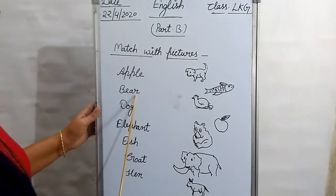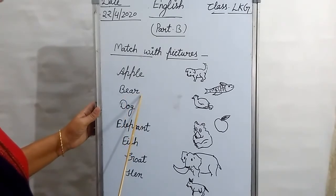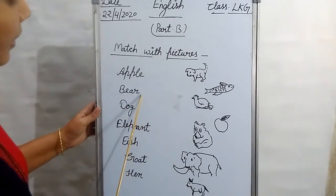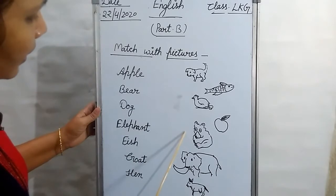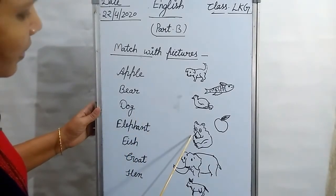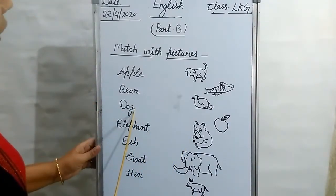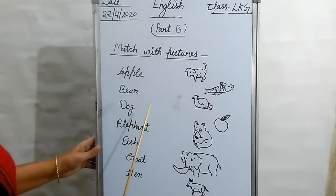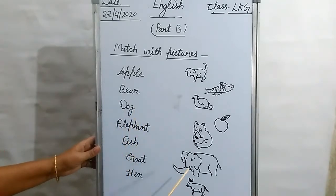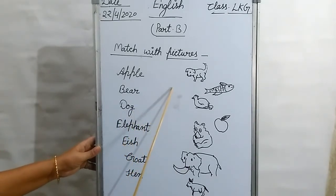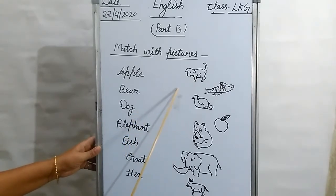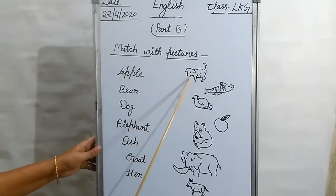And this is bear — B, E, A, R. Bear. Where is the bear? Here. So match bear with this picture. Now, dog — D, O, G. Dog. Where is the dog? Dog is here. So match this dog to this picture.